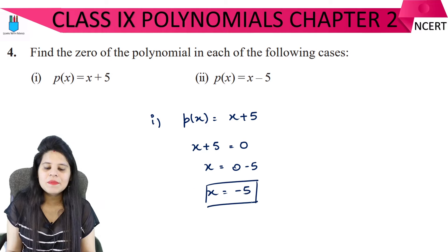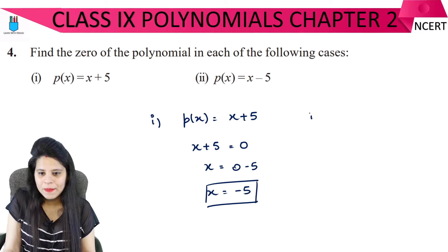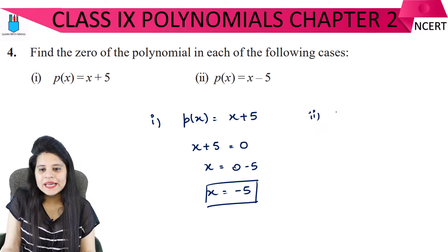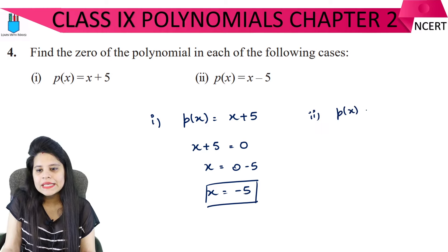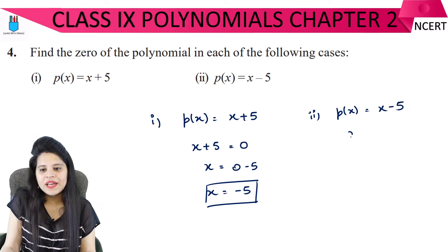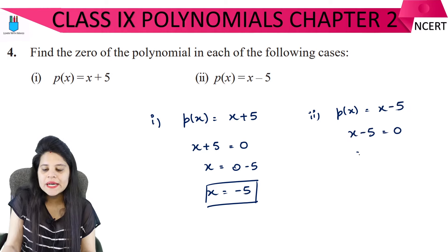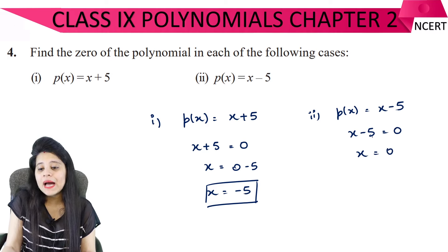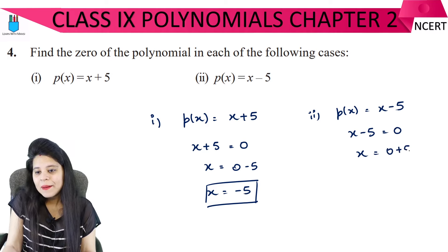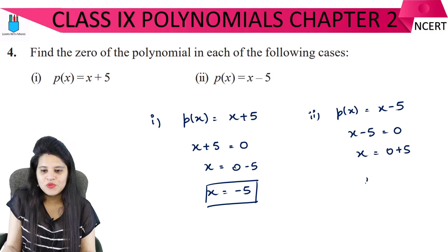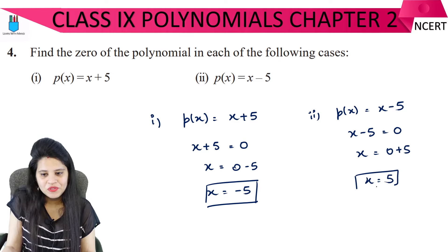For the second part, we have p(x) equals x minus 5. Again, set x minus 5 equal to 0. Moving minus 5 to the other side gives plus 5, so therefore x equals 5.